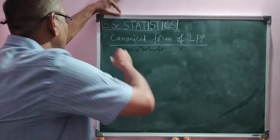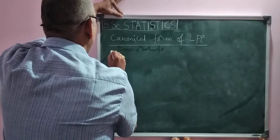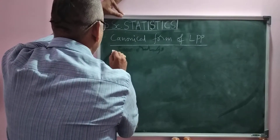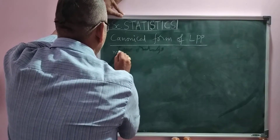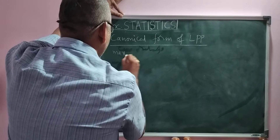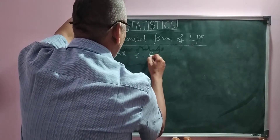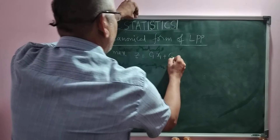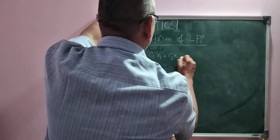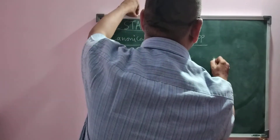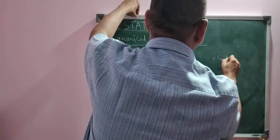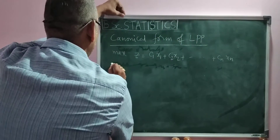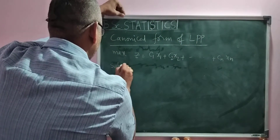So now I write one by one. The Linear Programming Problem Canonical Form is going to be considered as: Maximize z = c1x1 + c2x2 + ... + cnxn. This is the objective function. Subject to the constraints: